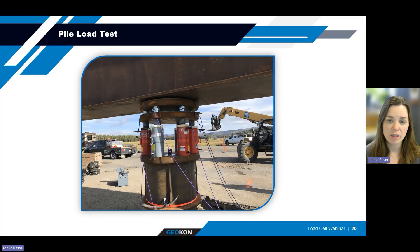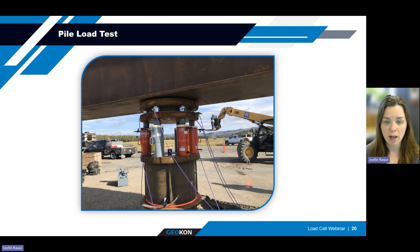Here we have an example of a pile load test where the top of the pile will be loaded with six hydraulic jacks against an overhead reaction frame, tied down on the ends with a couple of piles installed to serve as reaction piles. Six load cells are installed concentrically to each of the hydraulic jacks. The jacks are then loaded simultaneously through a manifold system connected to hydraulic pumps.